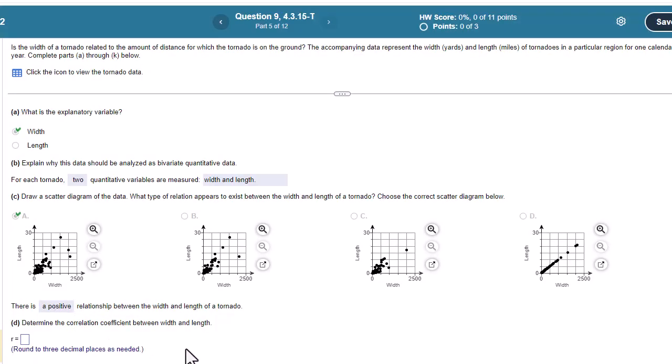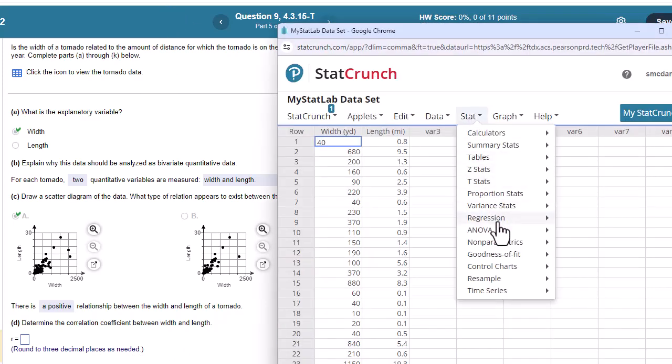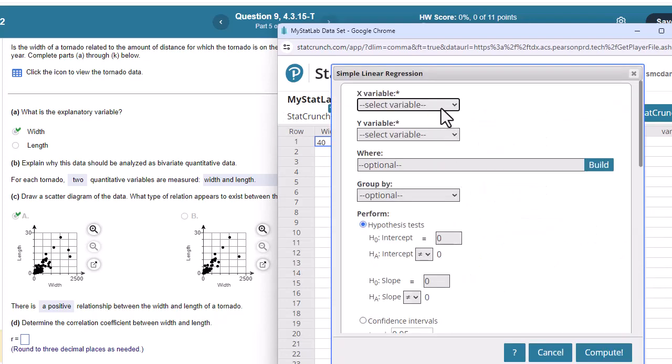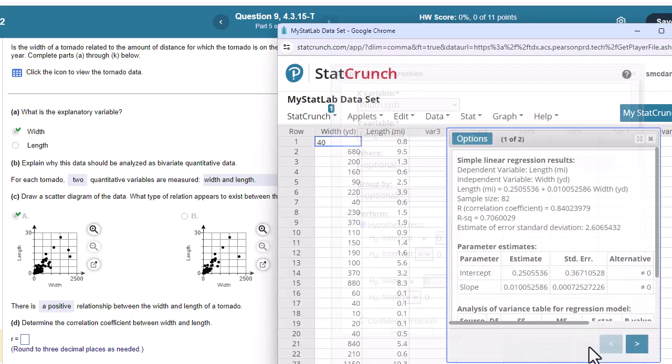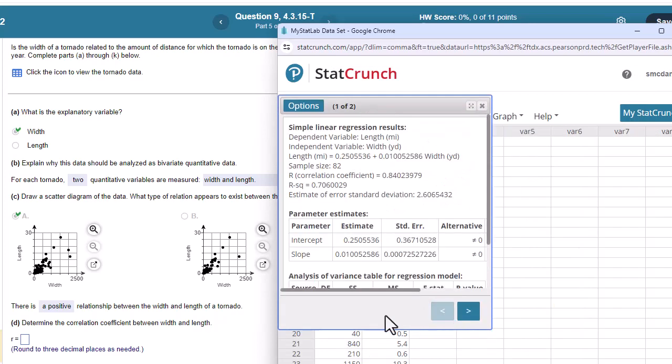Determine the correlation coefficient between width and length. So I'm going to go ahead and x out of this and I need to run regression. So stat, regression, simple linear, width and length, and just press compute. And I could have just gone here first, and there it is. Here is, it's looking for r. 0.840.